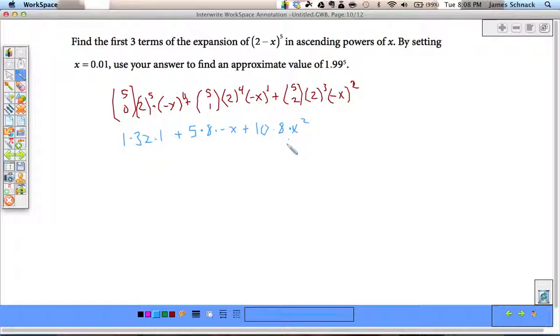So, we're just using the first three to help us approximate this value. So, this is 32 minus 40x plus 80x squared. All right. So, now what we can do is we can plug in x equals 0.01.